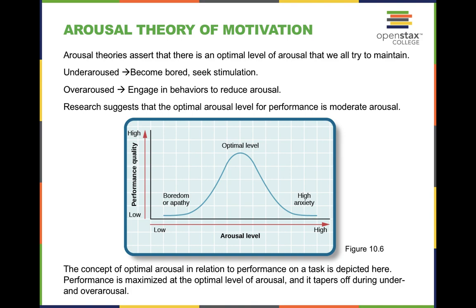Let's talk about the arousal theory of motivation. This theory may seem like it overlaps with the previous one, but let me show you how it differs. The arousal theory asserts that there's an optimal level of arousal that we're all trying to maintain. From a macro perspective in life, whenever we're under-aroused or just bored, we tend to seek out something that will bring us to a level of stimulation. Our phones are a great example of this.